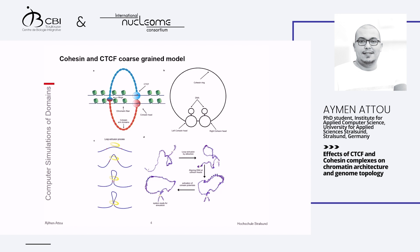Since we are not interested in the loop extrusion process itself, we are only interested in having the correct positioning of loop structures. What we did was apply an attraction potential at the level of CTCF binding sites to bring them close so we can have the correct positions of all the structures. Then we trigger and activate our cohesin potentials to start our simulations.